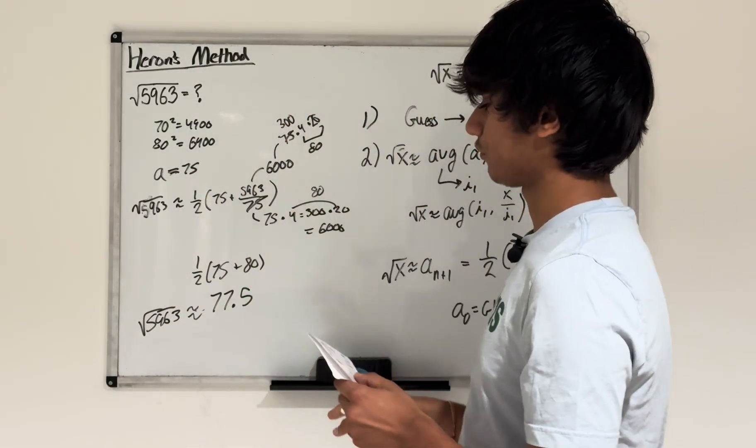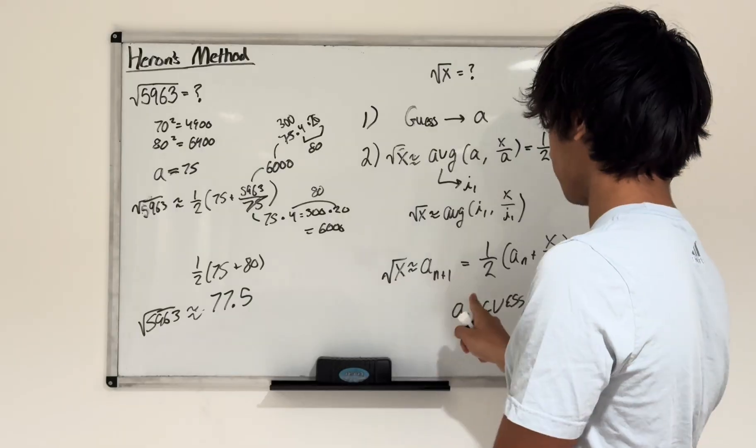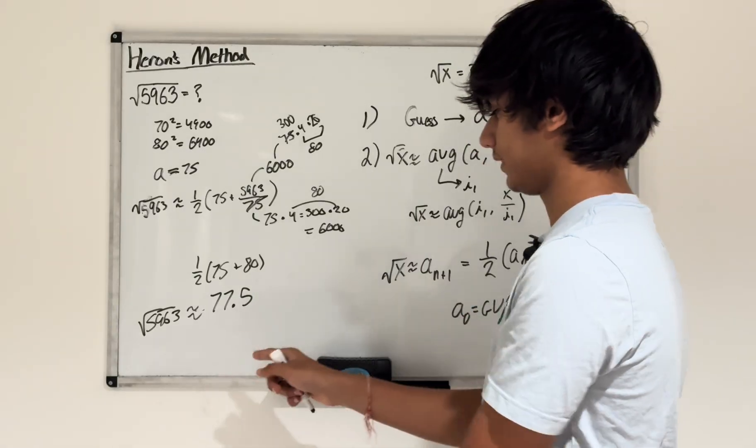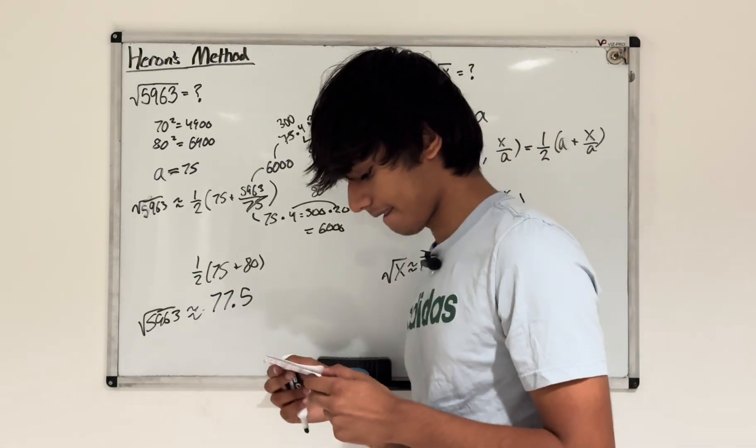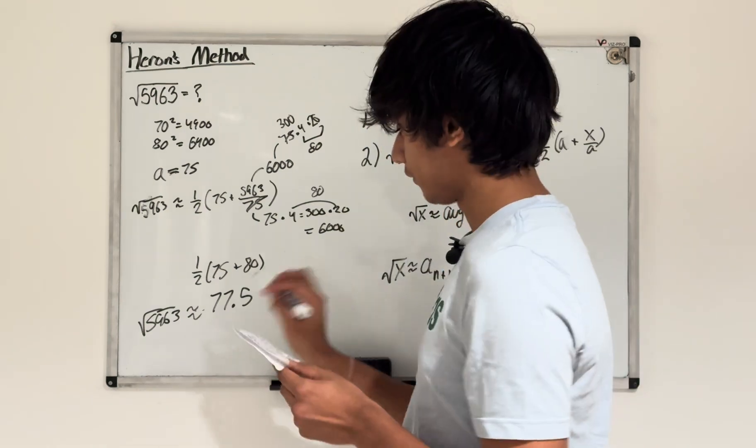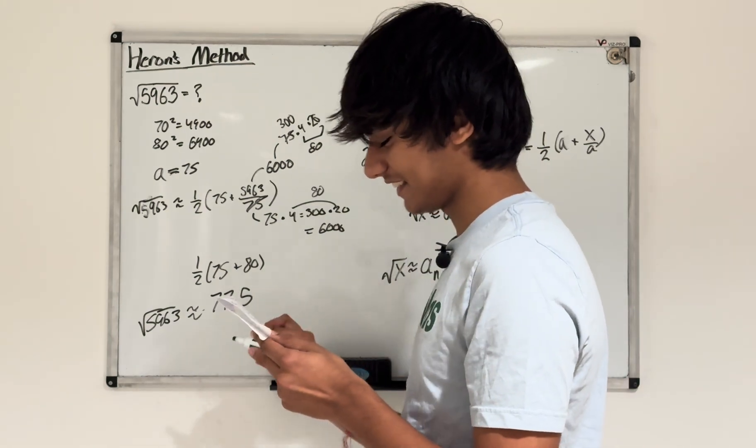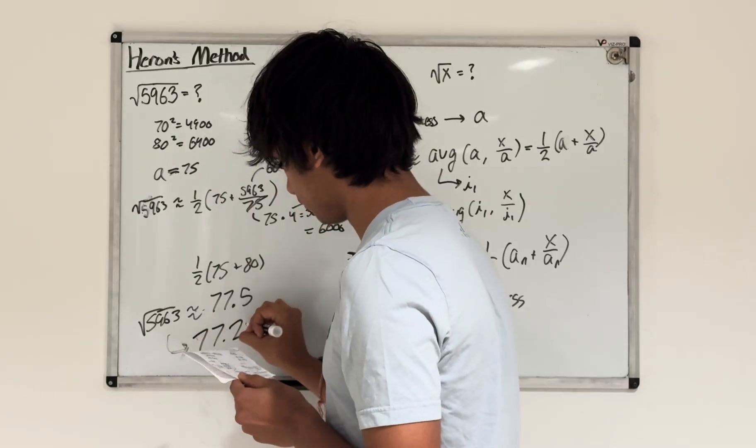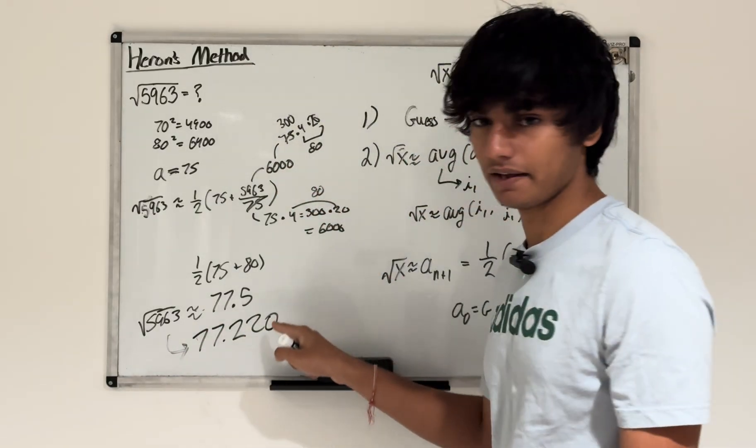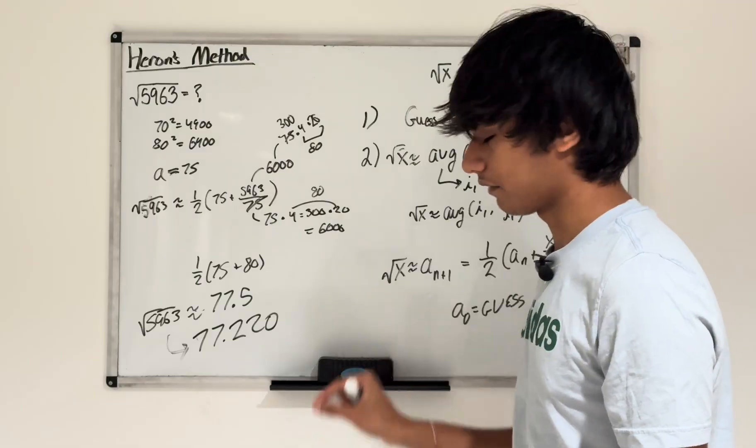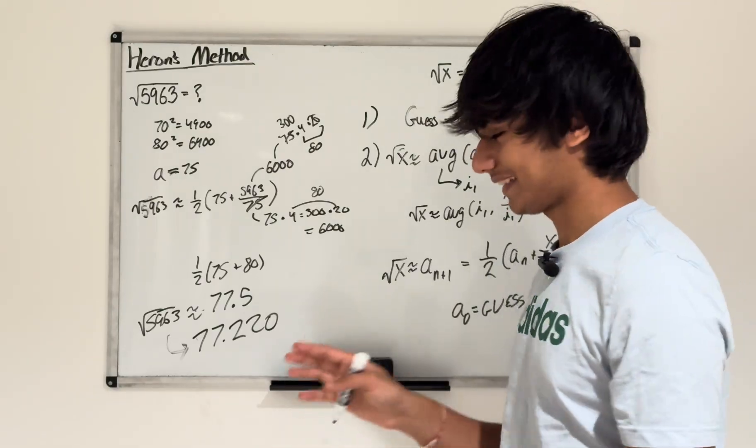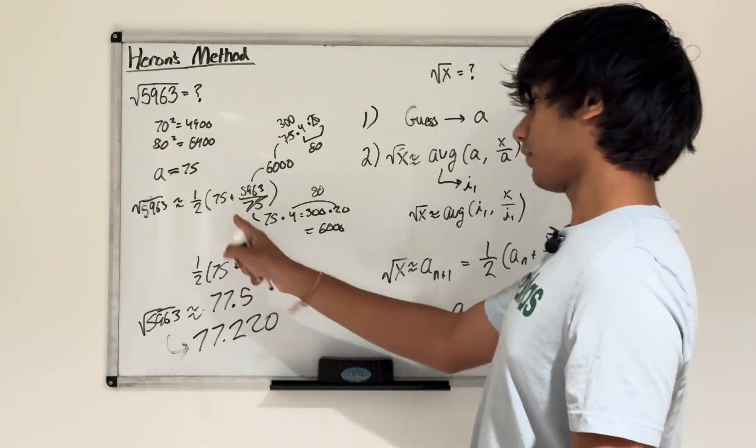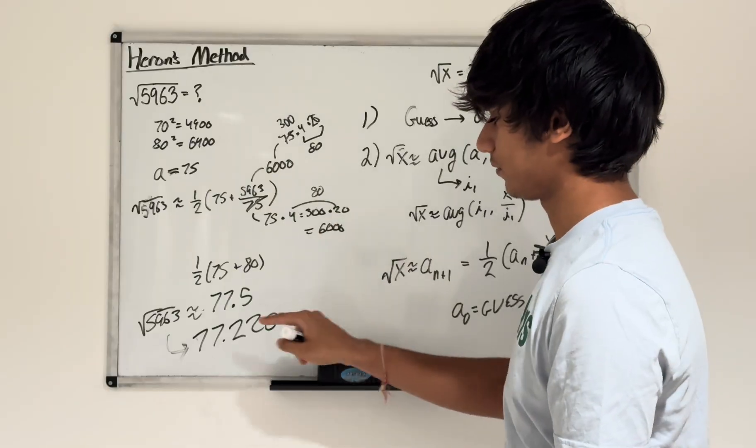That's how we do Heron's method. Obviously, we could keep doing it here, but just for simplicity, I just did it one time. What is the actual value for square root of 5,963? The actual value is 77.220. So we're only 0.28 off, which is a very good number to be off. You can honestly do this in your head and get such a close value to the actual value.